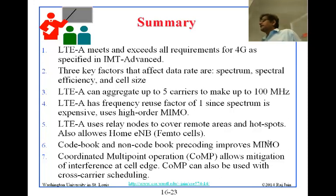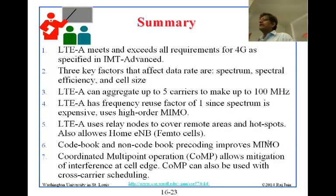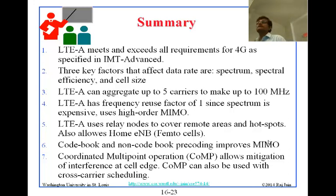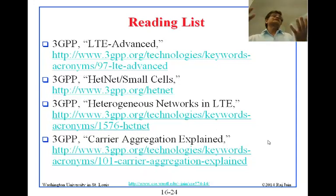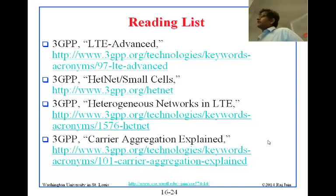CoMP — Coordinated Multipoint Operation — allows mitigation of interference at the cell edge: both cells use the same frequency but coordinate so they do not interfere. CoMP can also be used with cross-carrier scheduling, where one carrier is used as primary by one cell and secondary by another. All of this lecture material came from the 3GPP website, and reading those four pages is highly recommended. The 3GPP source is best for the latest technology because papers and books can be slightly out of date regarding what the standard actually selected.